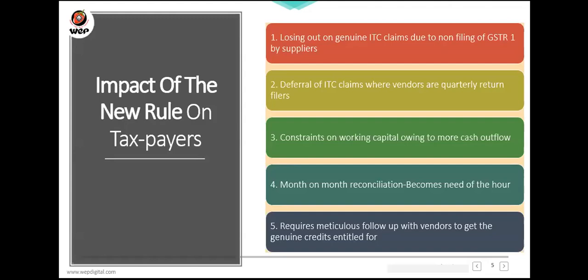To repeat the impact points: losing out on genuine ITC due to supplier non-filing; deferral of ITC where vendors are quarterly filers; working capital constraints from cash outflow; month-on-month reconciliation is very important — you need to know your matched and near-matched invoices to claim ITC correctly; and continuous follow-up with vendors is essential. For example, if you received 10 invoices from a vendor but they uploaded GSTR 1 for only five, you must follow up to get the remaining five uploaded.